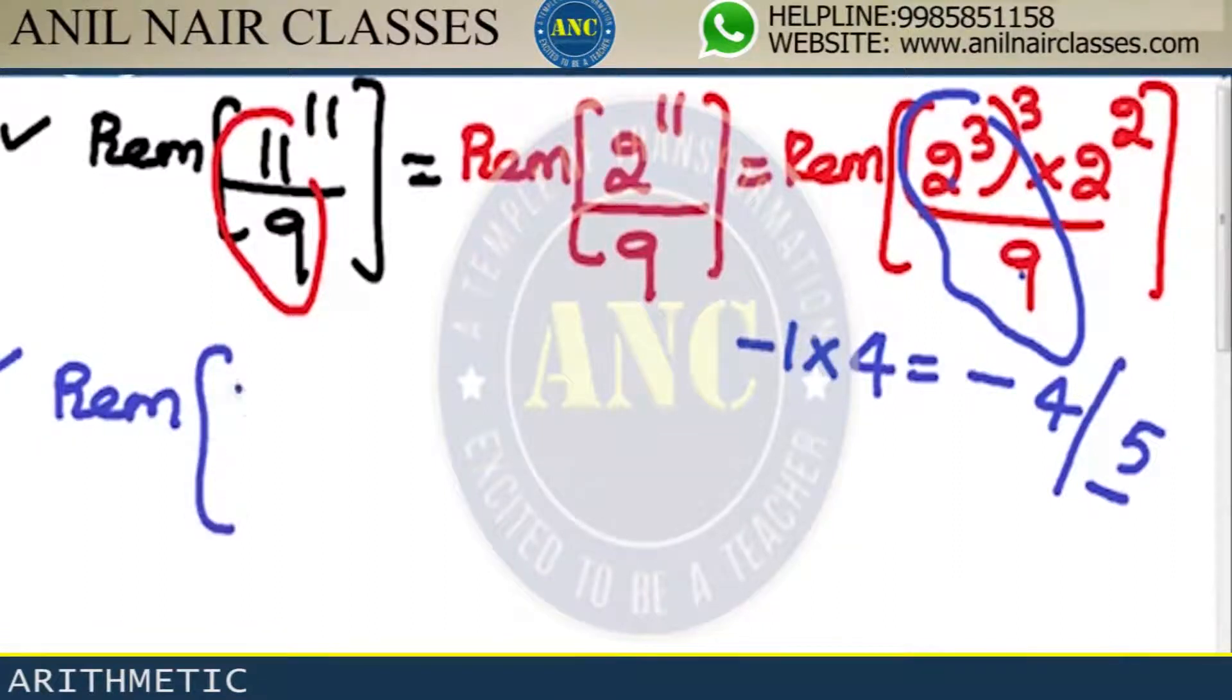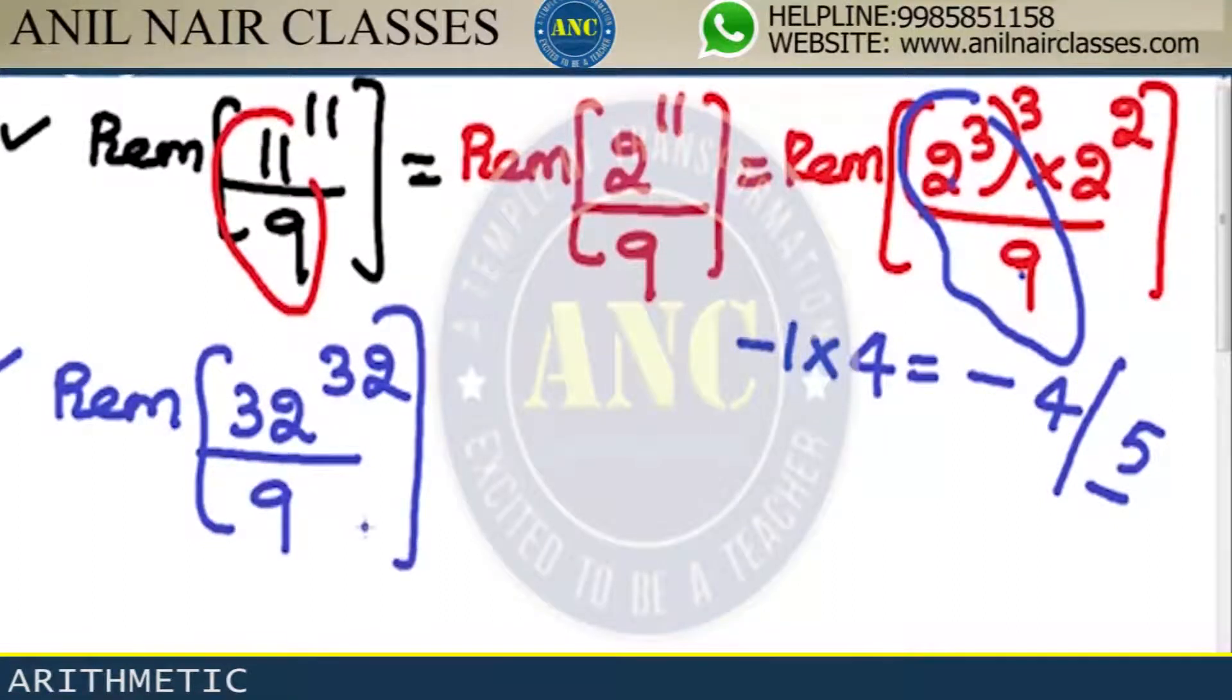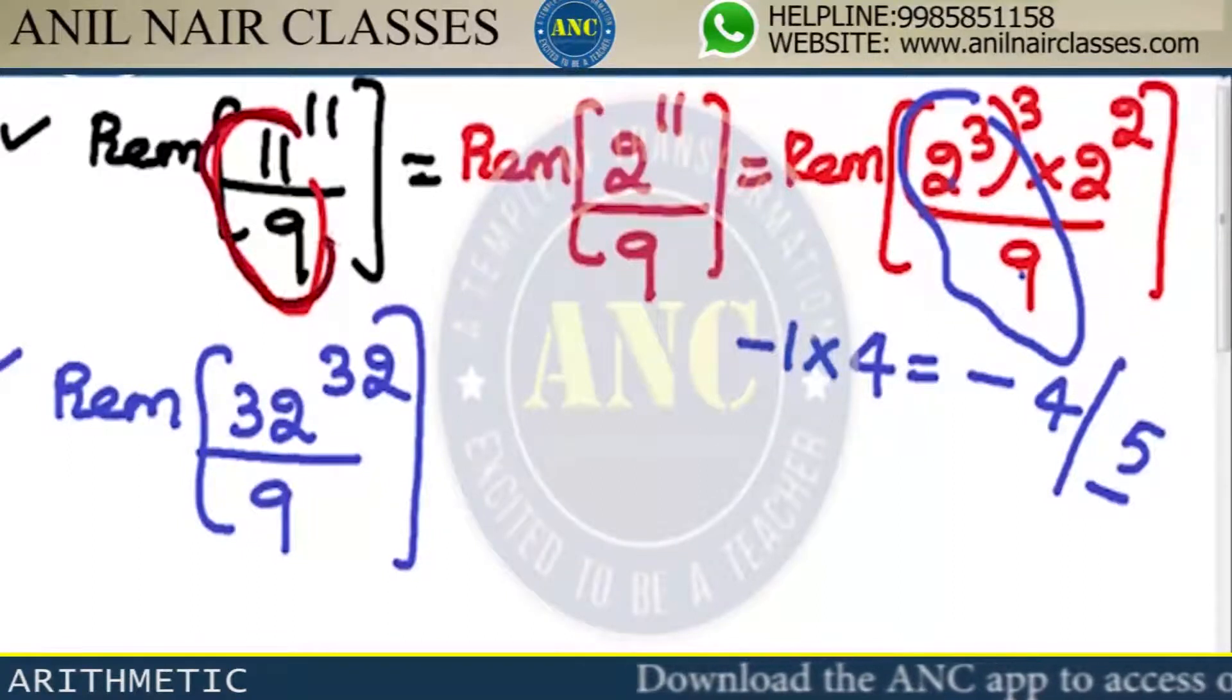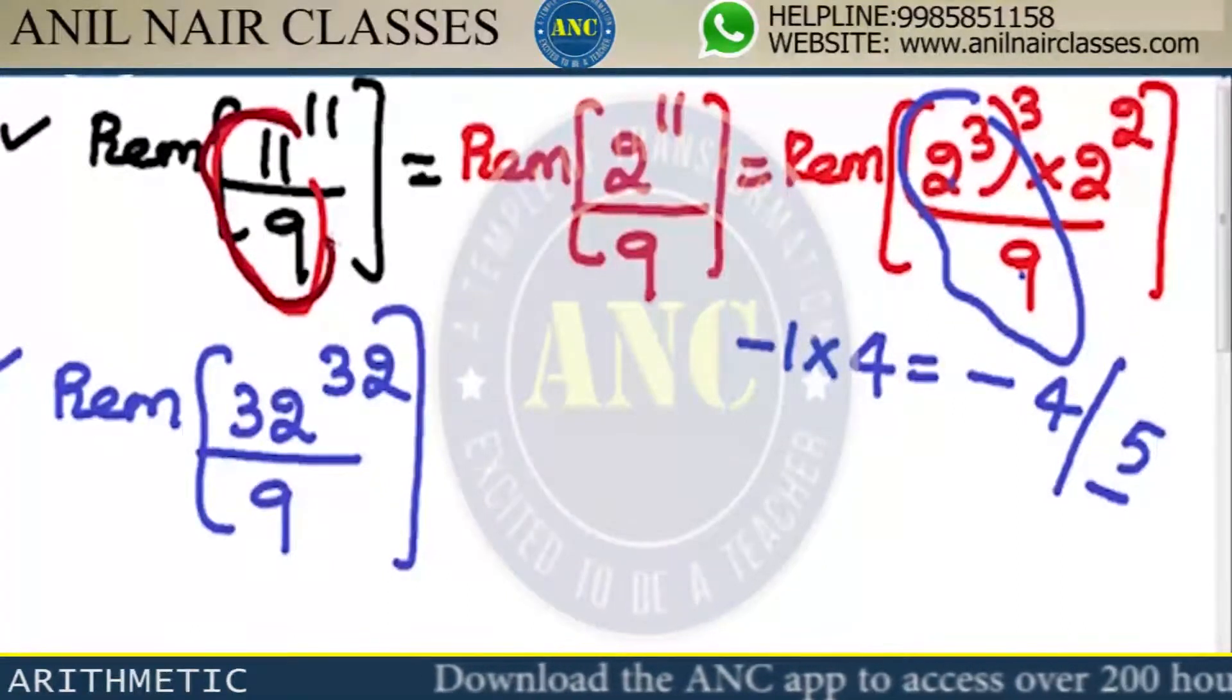More and more problems we'll solve in the class. 32 power 32 divided by 9. Can I take negative remainder? If you take negative remainder, the answer... you can take minus power. Even is plus, so it is 4 power 32 divided by 9.